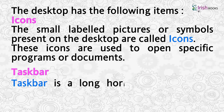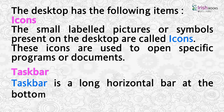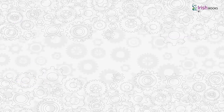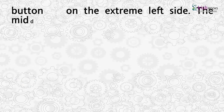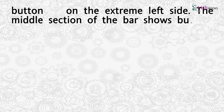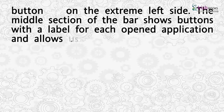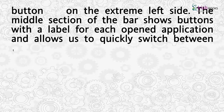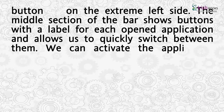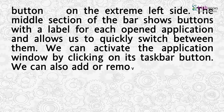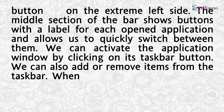The taskbar is a long horizontal bar at the bottom of the desktop. It has the Start button on the extreme left side. The middle section of the bar shows buttons with a label for each opened application and allows us to quickly switch between them. We can activate the application window by clicking on its taskbar button, and we can also add or remove items from the taskbar.